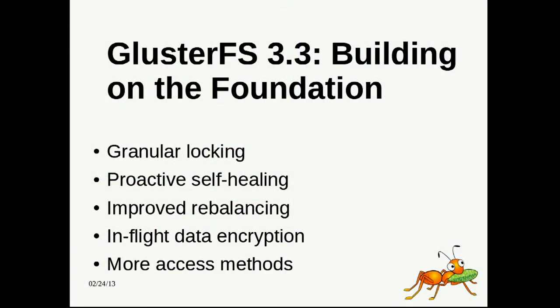So, let's look at the most recent GA release, 3.3. Is this echoing really badly? Tolerable? Okay. So, what are the features, what are the main features that were included in 3.3 that were made different from previous releases? One thing is granular locking.